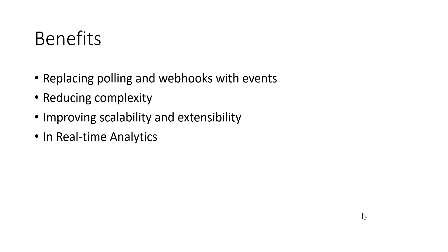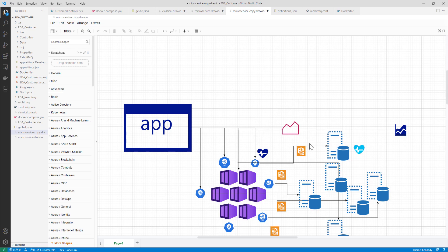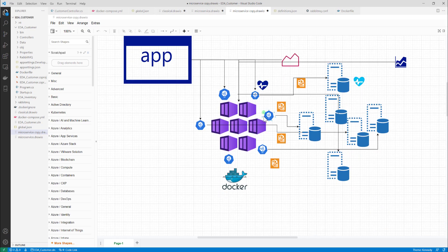Using event-driven architecture, there are many benefits: replacing polling and webhooks with events, reducing system complexity, improving scalability and extensibility, and enabling real-time analytics. The key difference in event-driven architecture is solving the data access problem — where multiple APIs are dependent on each other's responses. If one API is down, the dependent APIs also go down, and your whole system fails even though it's split into microservices.